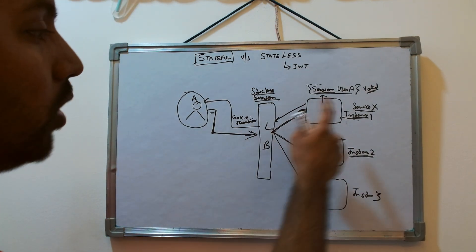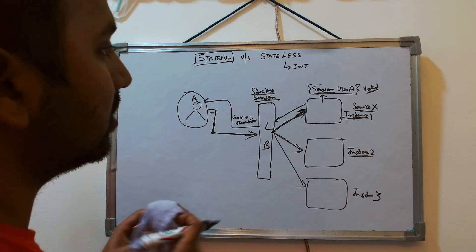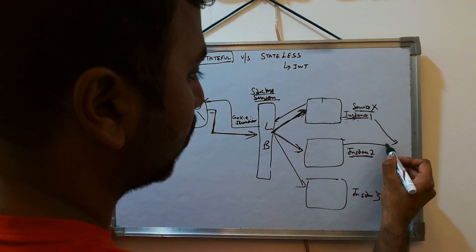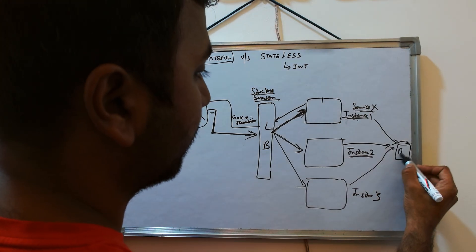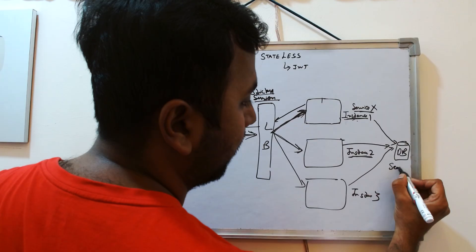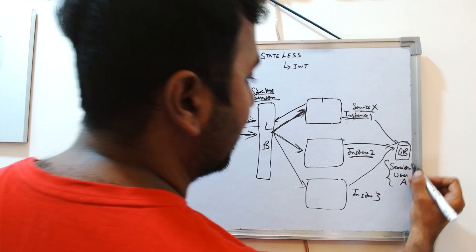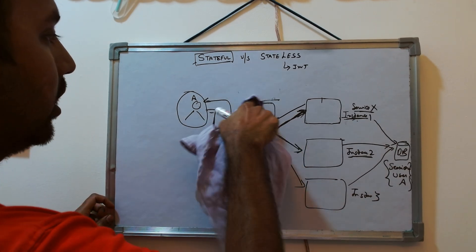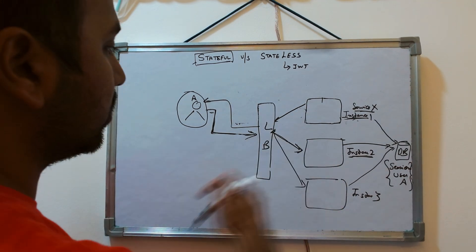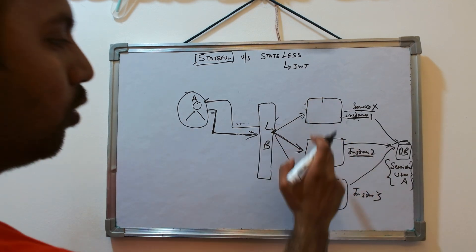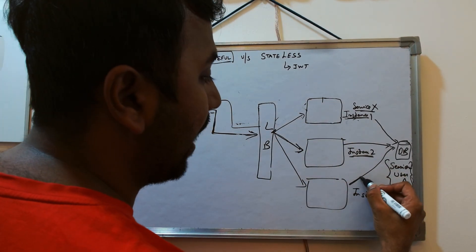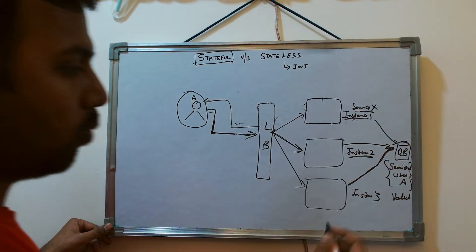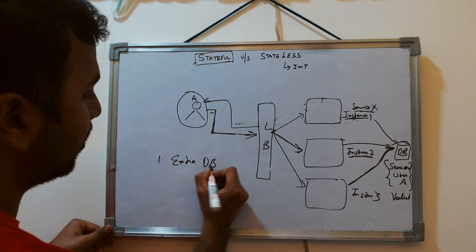To resolve this, what generally happens is these instances started storing the session into the DB. Now the session of user A is present into DB. So now you don't need a sticky session. Any time request comes from user A, it can go to any one of the instances, but they need one extra DB call to know that the session of user A is valid or not. First thing, one extra DB call. Second thing is...